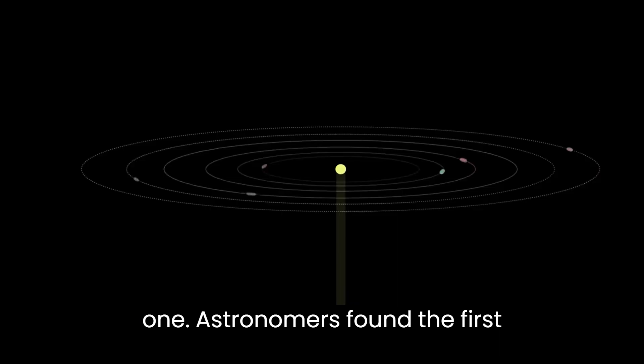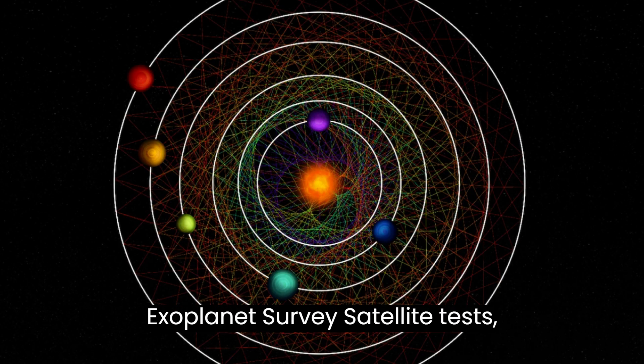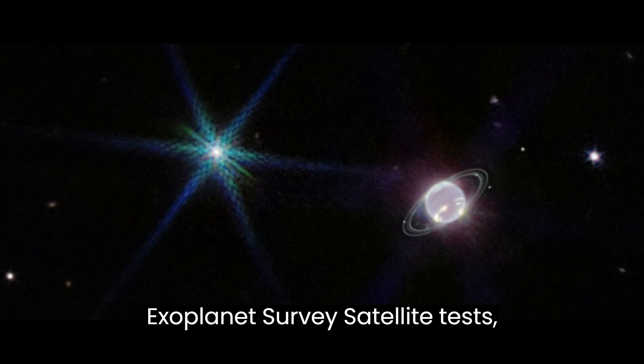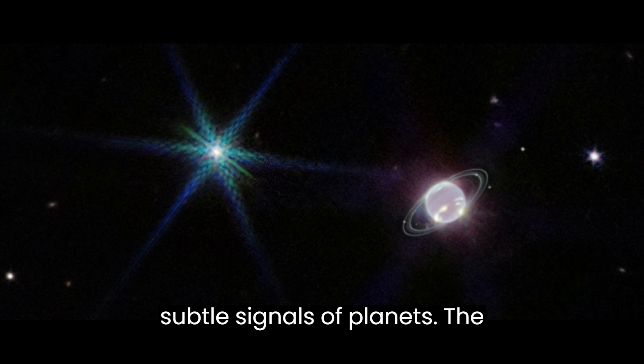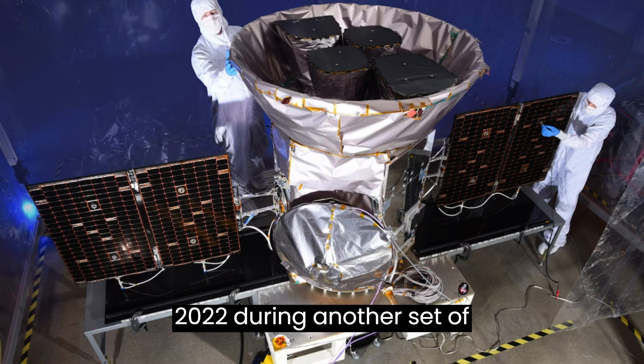Astronomers found the first couple of planets orbiting HD 110067 in 2020 using NASA's Transiting Exoplanet Survey Satellite, TESS, which scans the whole sky looking for subtle signals of planets.